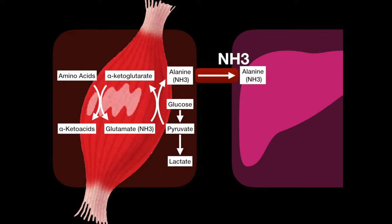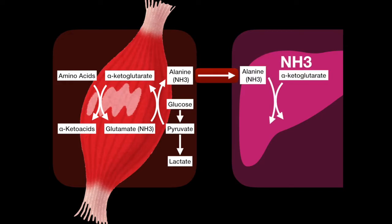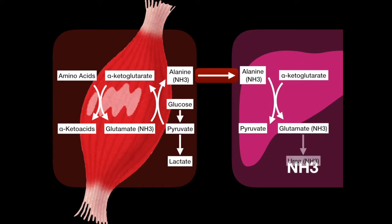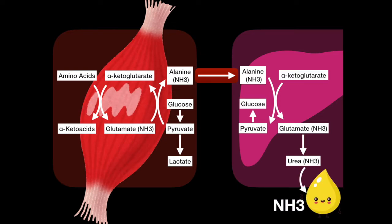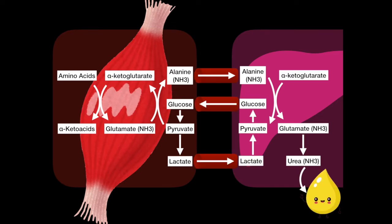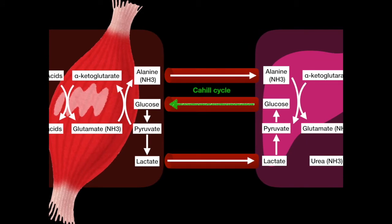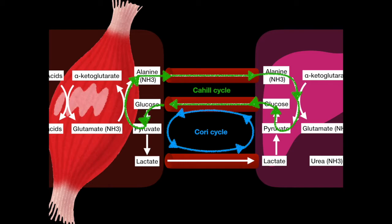Alanine is the intermediate used to transport the nitrogen to the liver, where it is deaminated by alpha-ketoglutarate to make glutamate once again, and then enters the urea cycle. The pyruvate supply comes from the Cori cycle, and the alanine-to-pyruvate process is called the Cahill cycle.